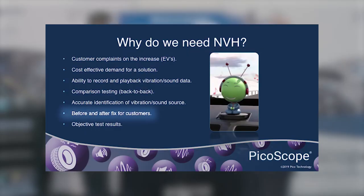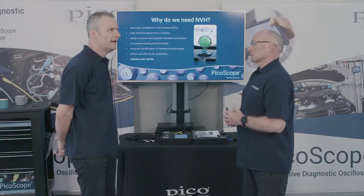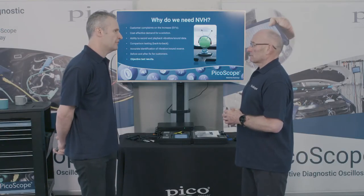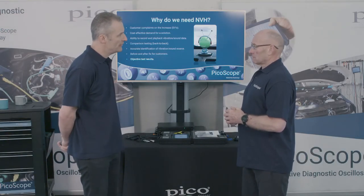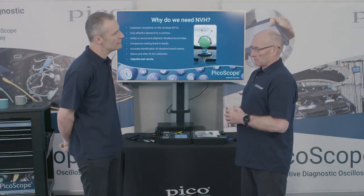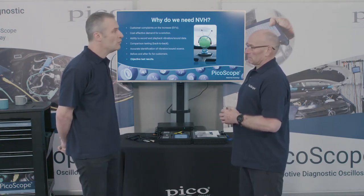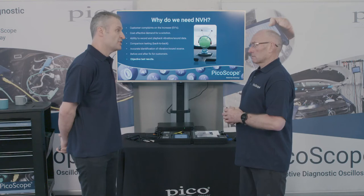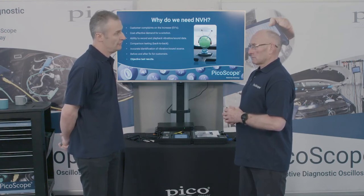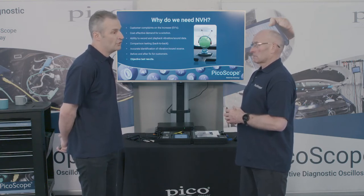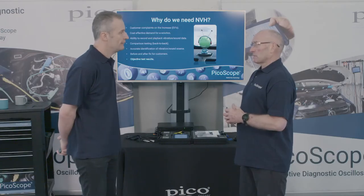The classic scenario: the customer has had the wheels balanced several times and says it can't be the wheels — but actually it can be. Before-and-after comparisons are also important for vehicle modifications — customers wanting performance shock absorbers or lowered suspension. Are they aware what that will do to ride quality? We need to measure before and after modifications, as well as before and after a fix, to qualify the repair.